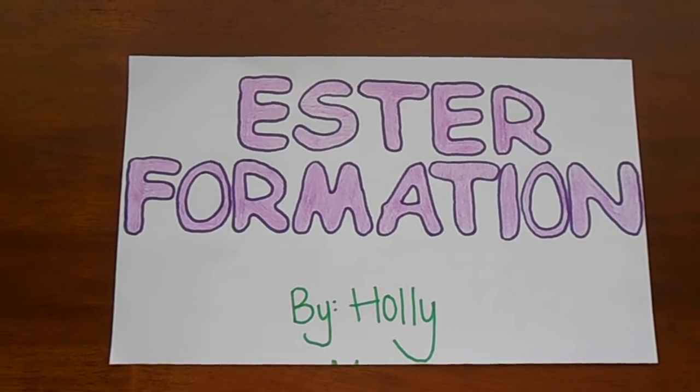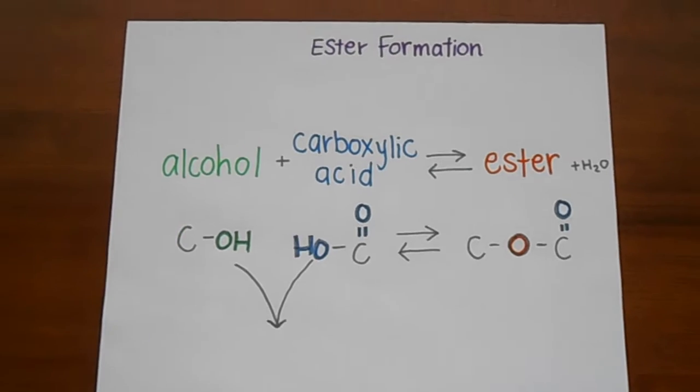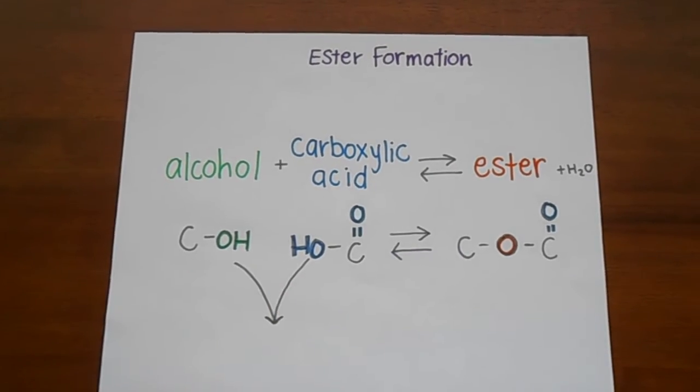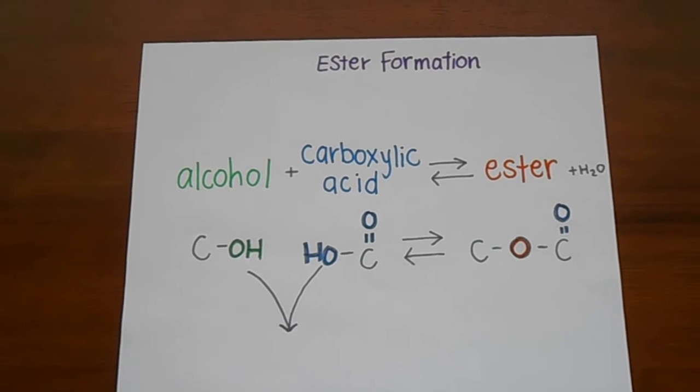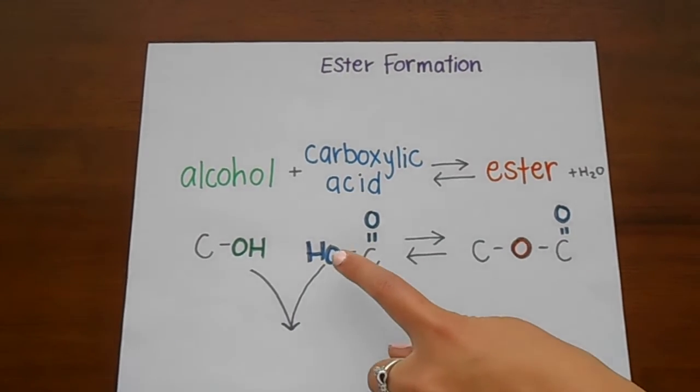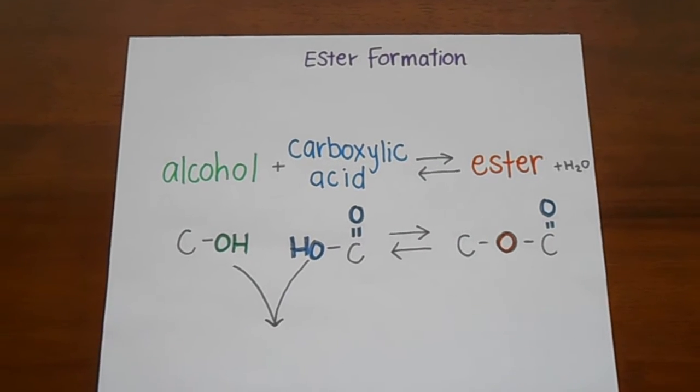An ester is formed when an alcohol group is combined with carboxylic acid. You can tell something is an alcohol if it has an OH at the end of the carbon chain or because the name ends in OL. Something is a carboxylic acid because you will see an OH and double bonded O or because the name ends with IC acid.